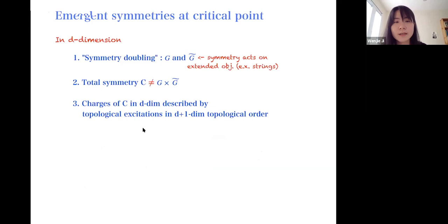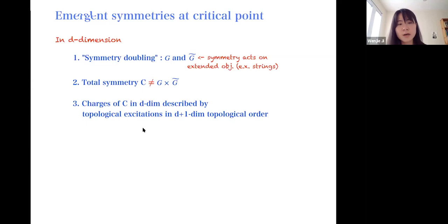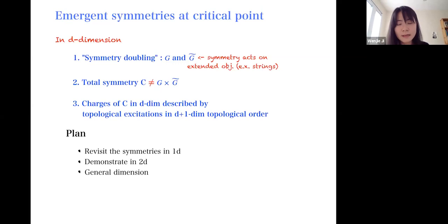We first want to identify a dual symmetry coming from the original symmetry. However, we cannot just describe this symmetry by the tensor product of the original symmetry and the dual symmetry, since we find that the charges of both symmetries are in general not mutually local. To really describe their charges in a D-dimensional critical theory, they correspond to data that is the same as the topological excitations in one higher-dimensional topological order.